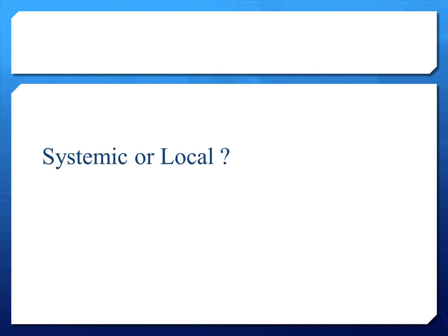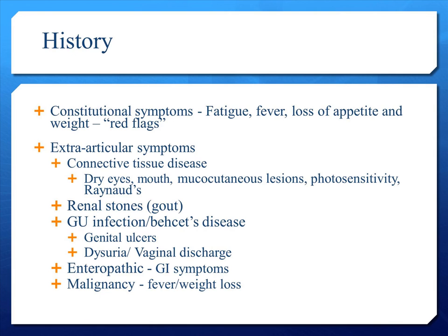Next, we have to find out from our patients if their symptoms are more systemic or local. To do this, we have to get a good history. We will need to ask if they have got any constitutional symptoms such as fatigue, fever, loss of appetite, and loss of weight — these are some of the red flags to consider if the patient is elderly. Other extra-articular symptoms such as dry eyes, dry mouth, mucocutaneous lesions, photosensitivity, or Raynaud's suggest underlying connective tissue disease. If the patient has a previous history of renal stones, consider gout. A history of genitourinary infection would suggest reactive arthritis. A history of genital ulcers or oral ulcers may suggest Behçet's disease. Symptoms of diarrhea would suggest possible underlying enteropathic spondyloarthropathy.